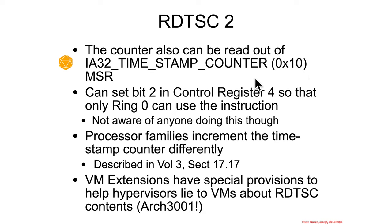There is actually a bit in Control Register 4, bit 2, which can be set to restrict the timestamp counter lookup to ring 0 only. So between the MSR reads and the restrictions on this, you could make it so user space straight up can't use this mechanism. But as far as I know, no one actually sets that — perhaps some virtualization software might, but I'm not aware of it.